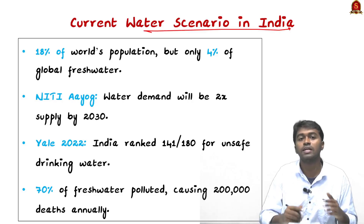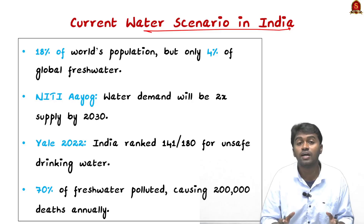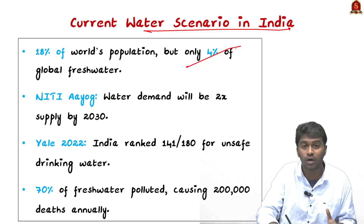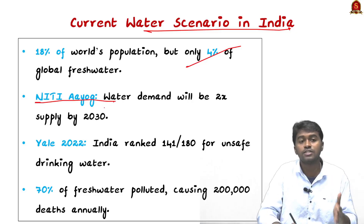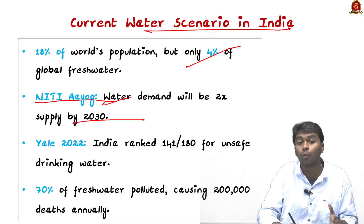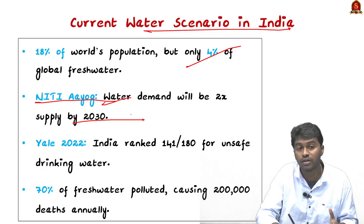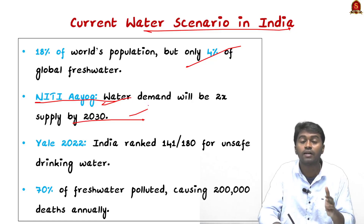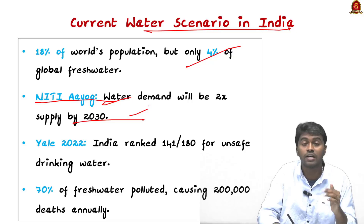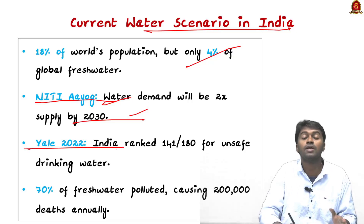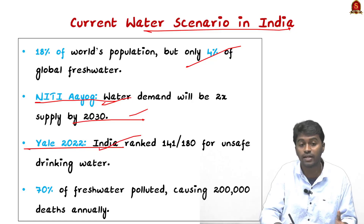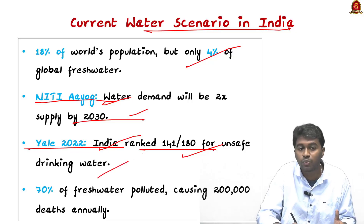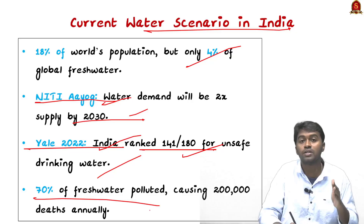India holds around 18 to 20 percent of the world's population but has only 4 percent of global freshwater. NITI Aayog estimates that by 2030, water demand will exceed supply by twice, widening water scarcity and potentially reducing India's GDP by 6 percent. A Yale University study in 2022 ranked India 141 out of 180 nations for unsafe drinking water.